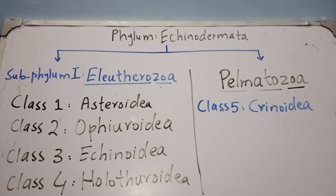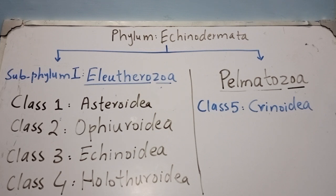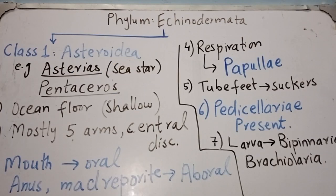The sub-phylum Eleutherozoa has four classes: Asteroidea, Ophiuroidea, Echinoidea, and Holothuroidea. Sub-phylum Pelmatozoa has only a single class, Crinoidea. So phylum Echinodermata has five classes in total, placed into two sub-phyla.